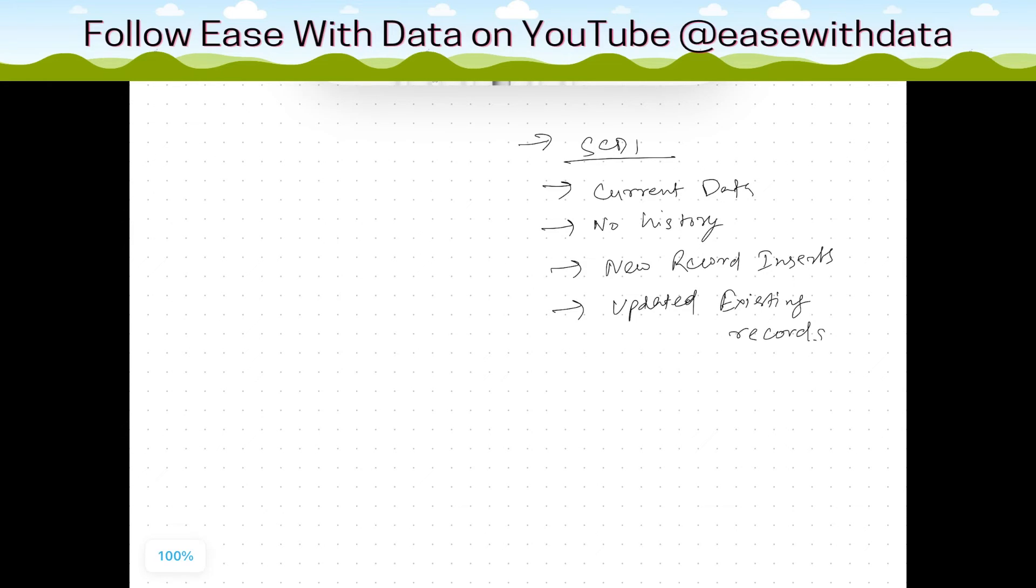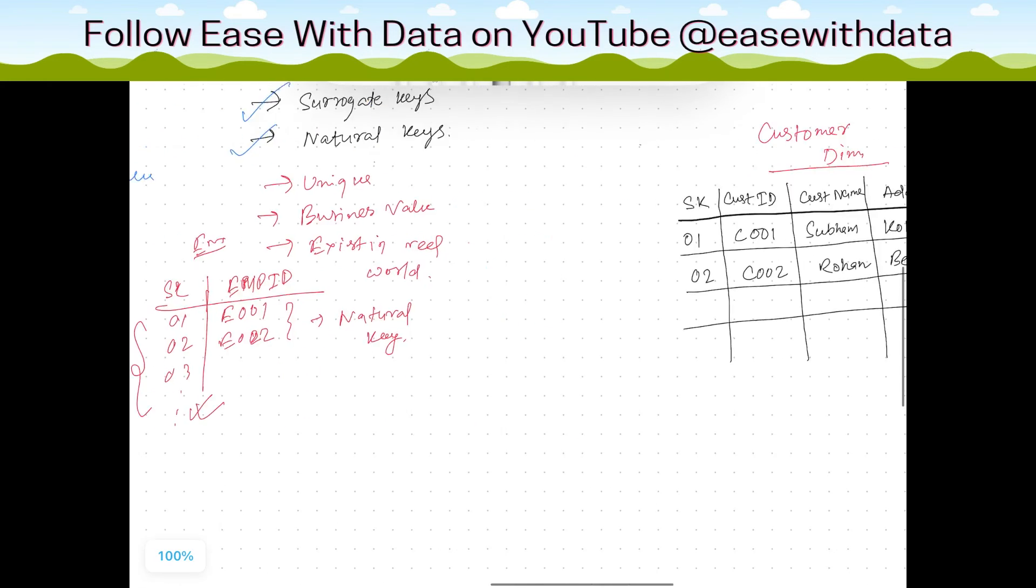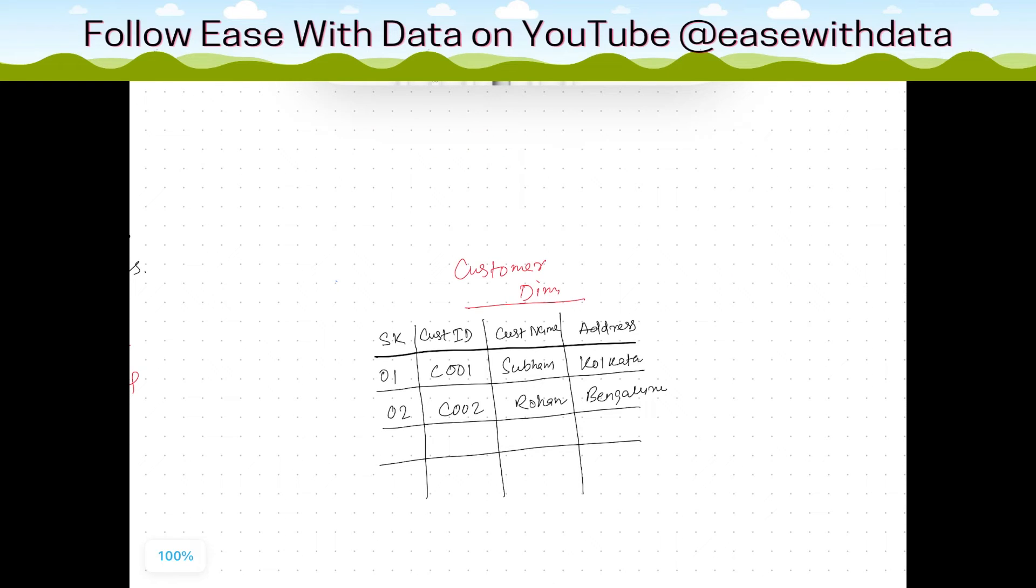We will see this quickly with an example. Consider we have a customer dimension like this. We have data where we have surrogate keys. This is the surrogate key, and we have customer ID C001 and C002, and we have customer name and address. For example, from your transactional system there is a change.